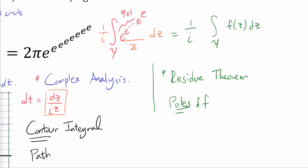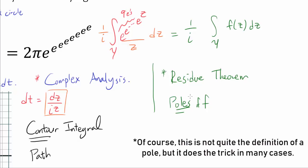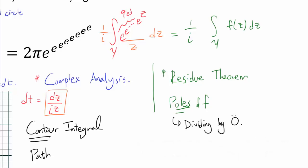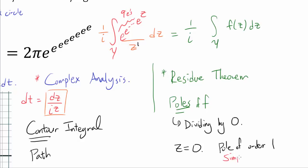So poles of our function f. A pole basically is when we're dividing by zero — that's when we're dividing by zero. And in this case, we're dividing by zero when z is equal to zero. In fact, the function inside is defined at every point except z equals zero. And in this case, you see that z is a linear factor with first power, and because the exponent is 1, you call this a pole of order 1. Or you may call it a simple pole. These two are exactly the same thing.